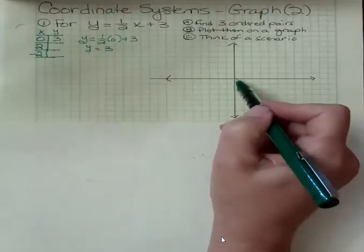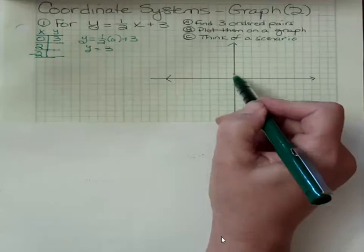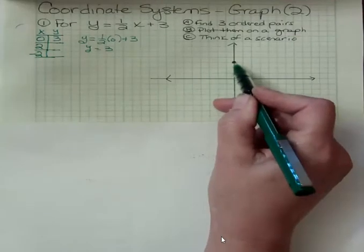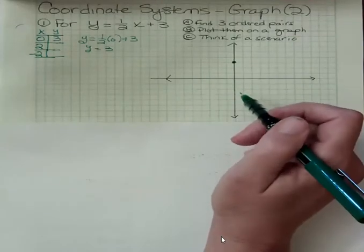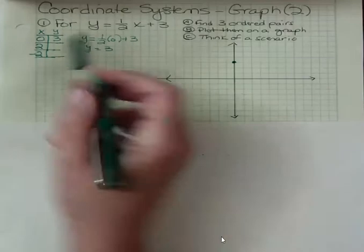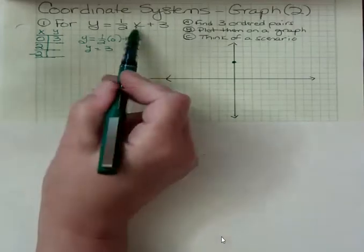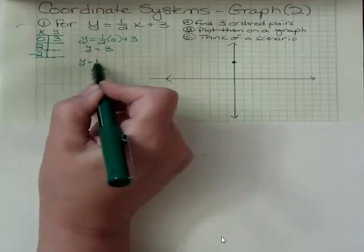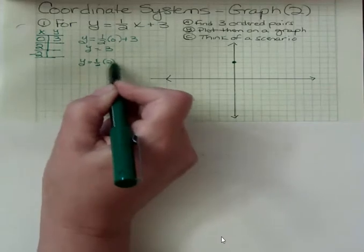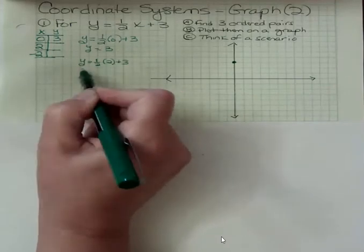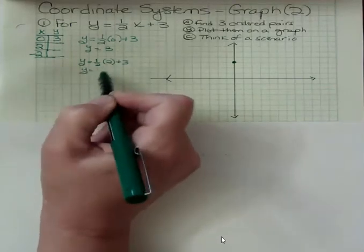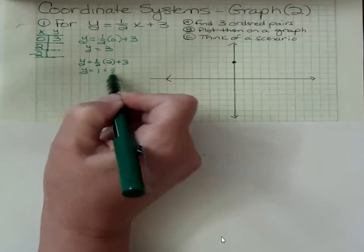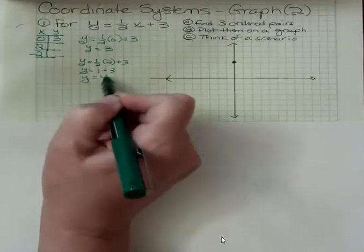If X is zero, I don't go left or right. I go up to three. You can number your graphs if that's helpful or if you need to. Now what if X is two? I have half of two plus three. Well, half of two is one, so I get Y is one plus three, or four.